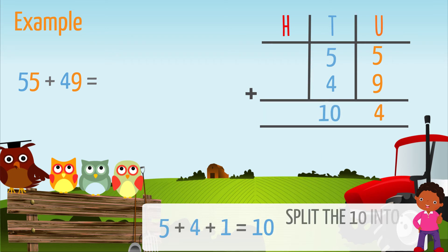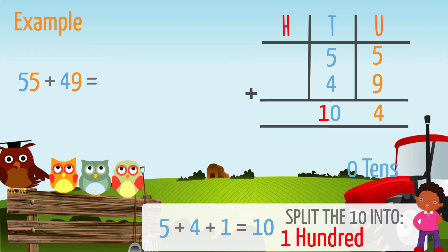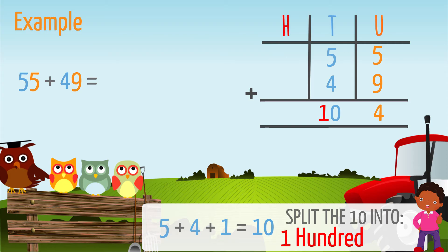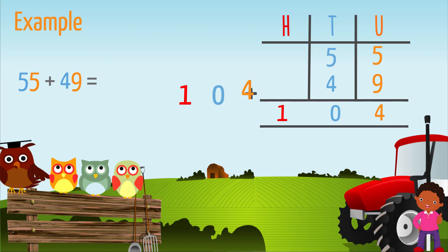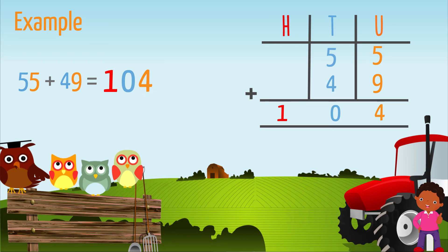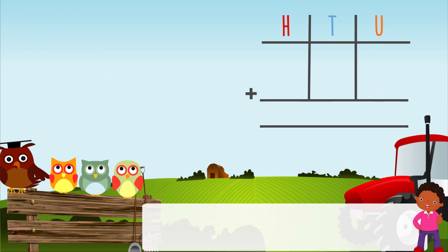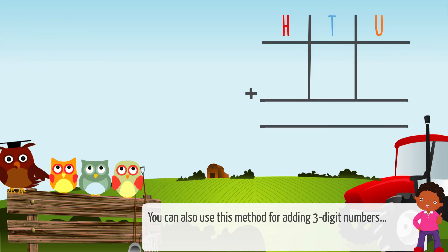The tens total gives one hundred and zero tens. We will then write zero in the tens column and one in the hundreds column. The answer is 104. You can also use this method for adding three-digit numbers: 217 plus 196.